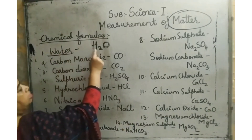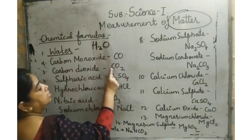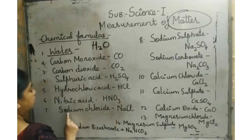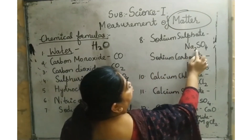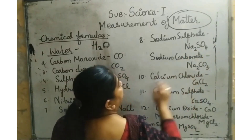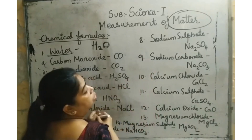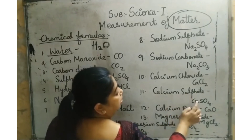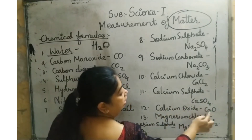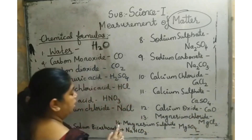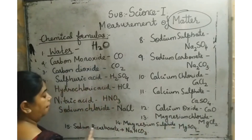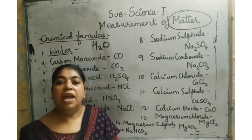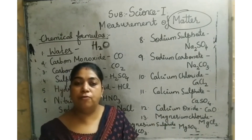Let me repeat all 15 molecular formulas: water H2O, carbon monoxide CO, carbon dioxide CO2, sulfuric acid H2SO4, hydrochloric acid HCl, nitric acid HNO3, sodium chloride NaCl, sodium sulfate Na2SO4, sodium carbonate Na2CO3, calcium chloride CaCl2, calcium sulfate CaSO4, calcium oxide CaO, magnesium chloride MgCl2, magnesium sulfate MgSO4, and sodium bicarbonate NaHCO3. In the next video, 15 more molecular formulas will be given.